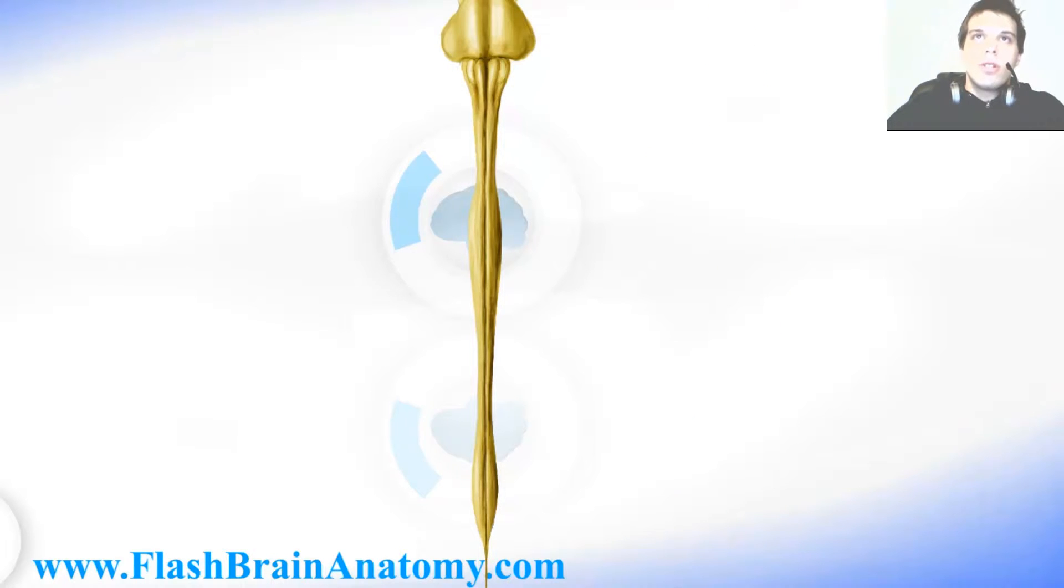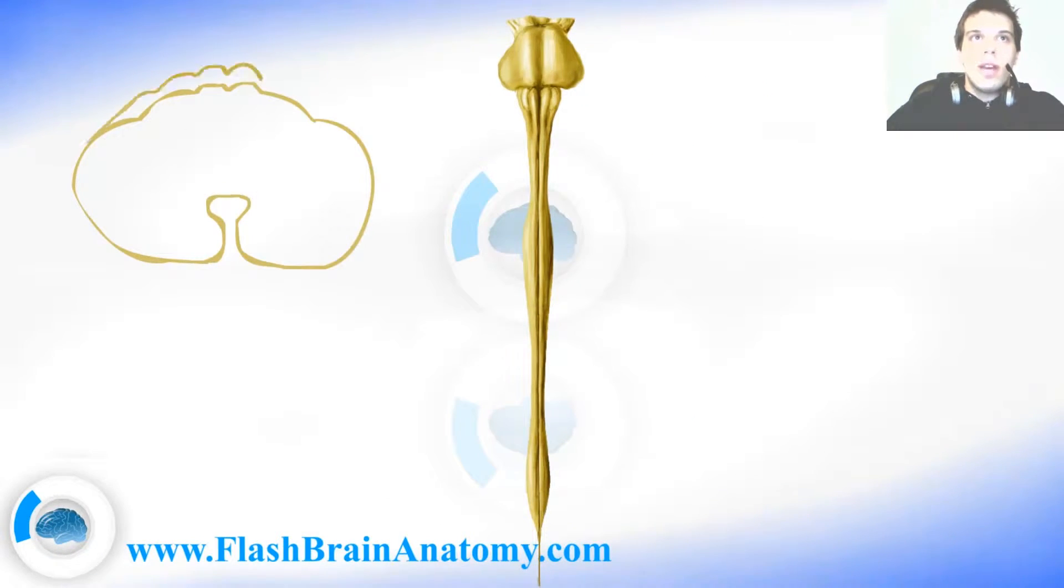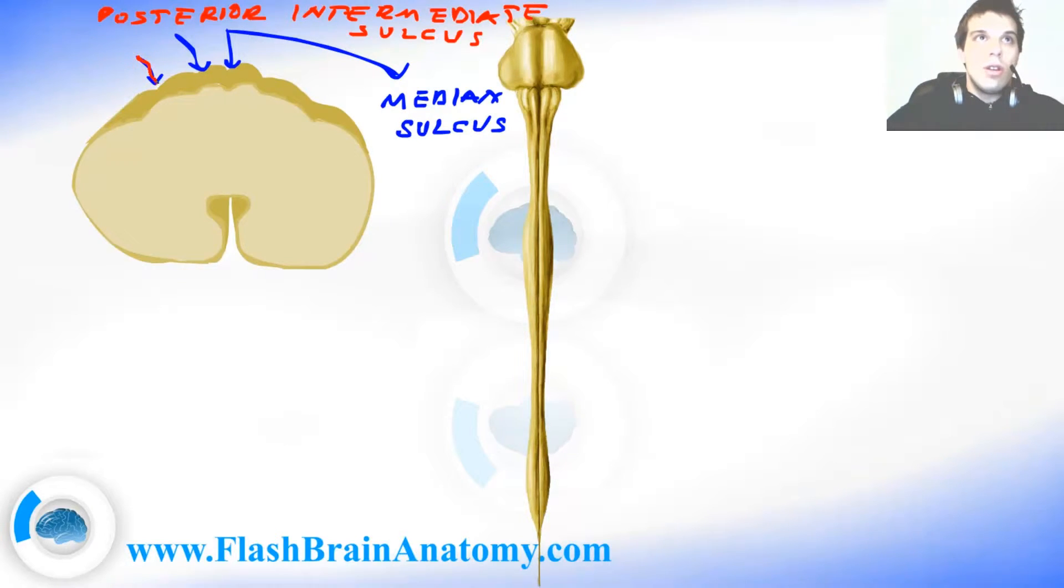Now I drew some cross-sections of the spinal cord. First we had the cervical segment. Behind here you can see the median sulcus. Right next to it is the posterior-intermediate sulcus. And more lateral is the posterolateral sulcus. So let me write it all down. This was the median sulcus. Then we had the posterior-intermediate sulcus. And this over here was the posterolateral sulcus.